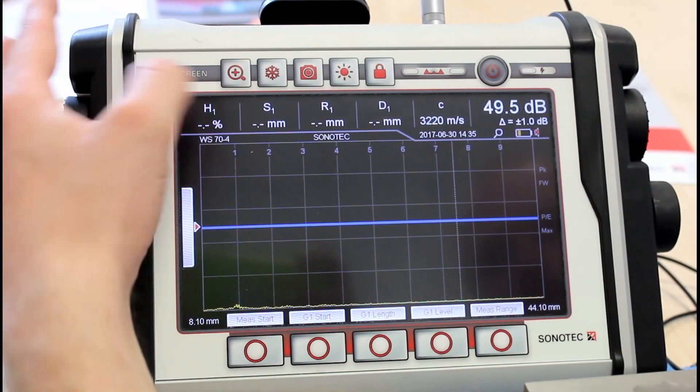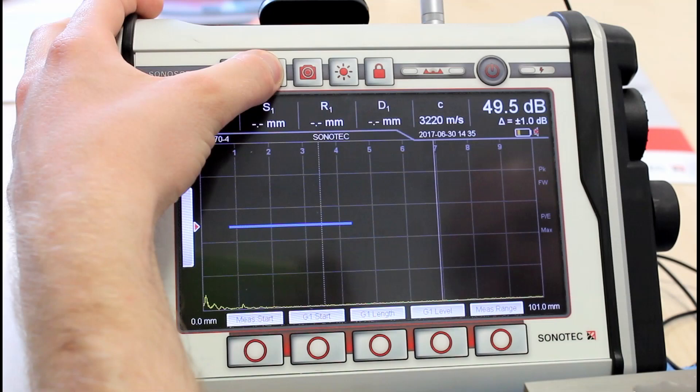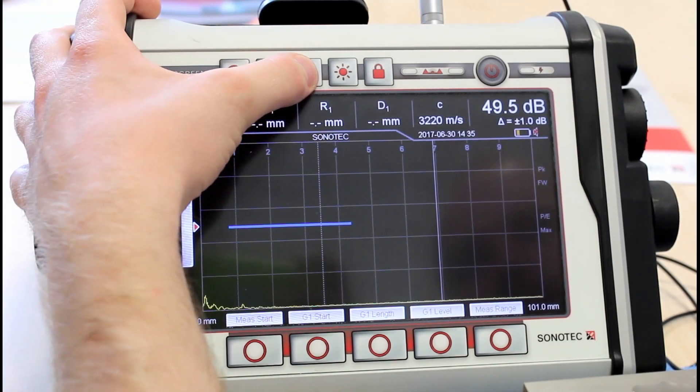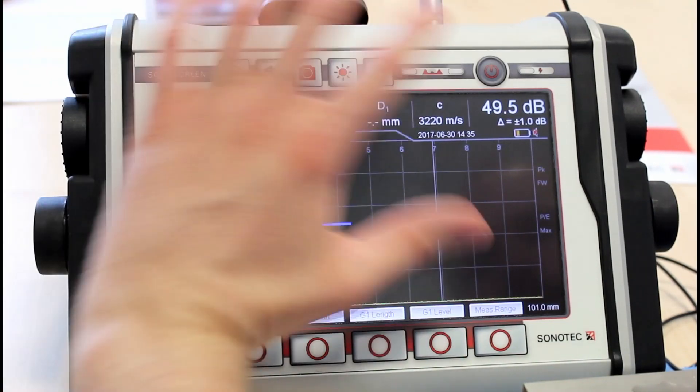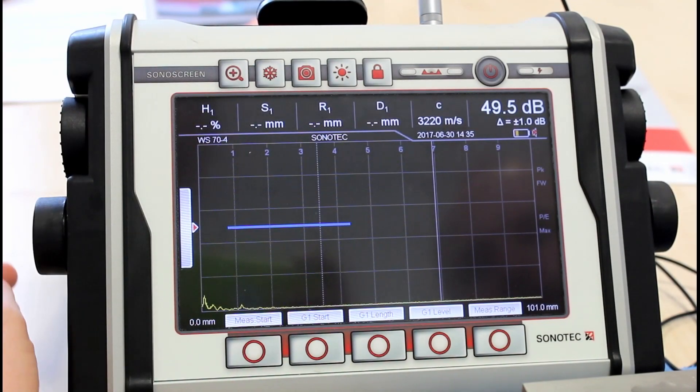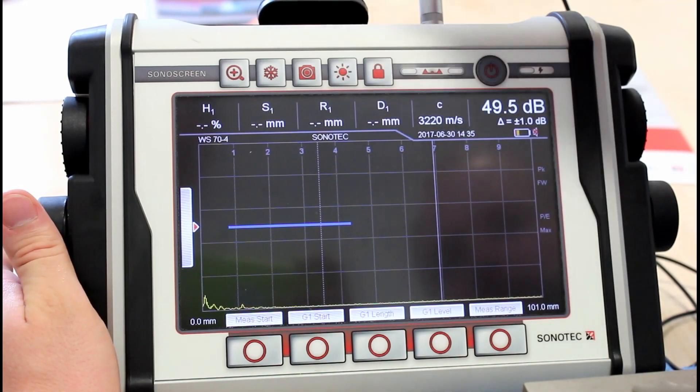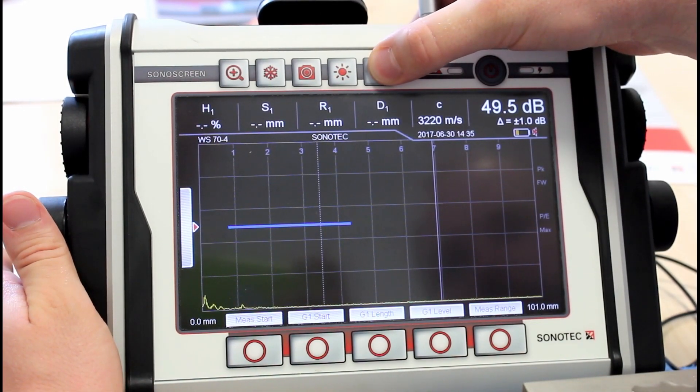Up here you have a gate zoom. You can freeze the screen. You can take a screenshot of the A-scan and all data and settings. You can change the background brightness right here and you can lock the screen right here.